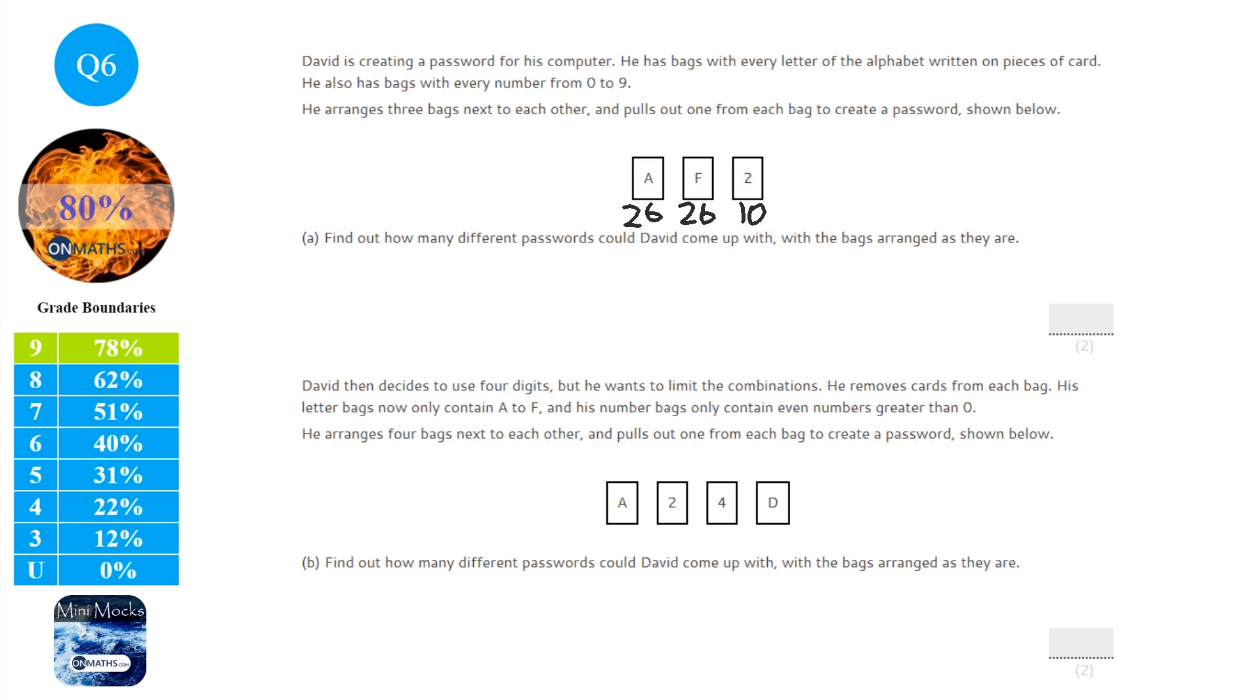And numbers from 0 to 9, we've got to be careful here because 0 is counted. So there are 10 numbers in that bag because there's 1, 2, 3, 4, 5, 6, 7, 8, 9. But there's also 0 so that's 10 in total. And to get the amount of combinations all we do is 26 times 26 times 10. And we'll have a calculator for this so 26 times 26 times 10 which is 6760. Which seems quite a lot but there we go.